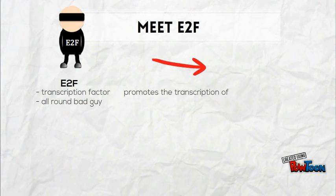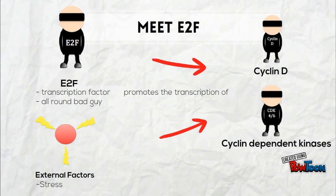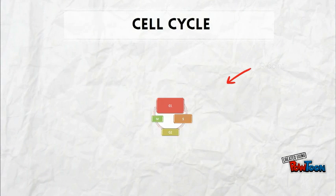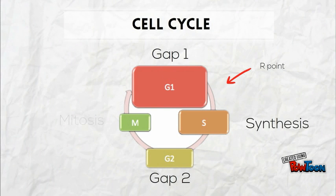E2F promotes cell cycle progression by producing proteins including cyclin-dependent kinases 4 and 6, and cyclin D. Extracellular signals such as stress can also increase cyclin D levels. You can think of E2F as your criminal ringleader with his accomplices. Cells go through a number of cell cycle stages to proliferate, including Gap 1 phase, Synthesis, Gap 2 phase, and Mitosis.